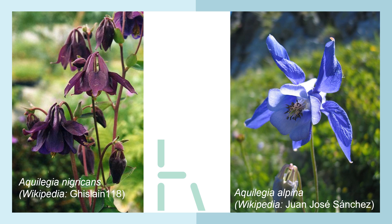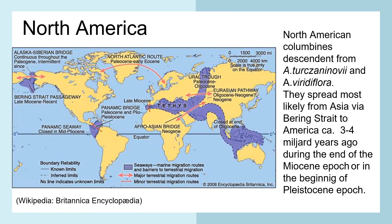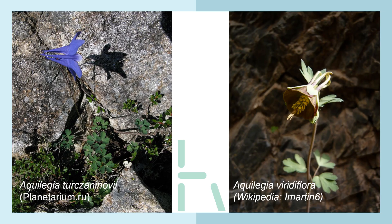Nigricans and alpina. North America. North American Columbines descended from Aquilegia turksaninovii and Aquilegia viridiflora. They spread most likely from Asia via the Bering Strait to America 3–4 million years ago during the end of the Miocene epoch or in the beginning of the Pleistocene epoch. Both have pretty long spurs.